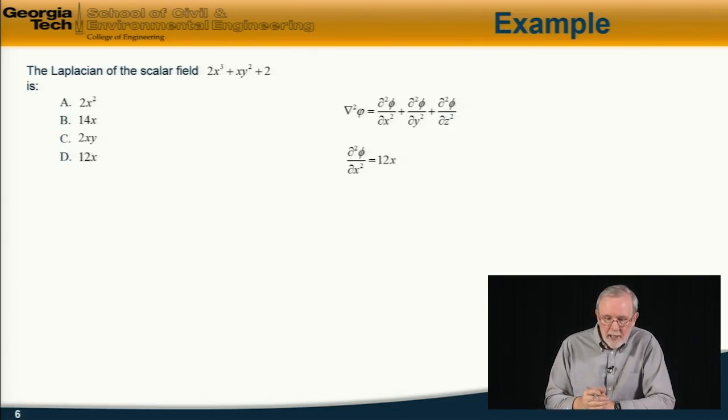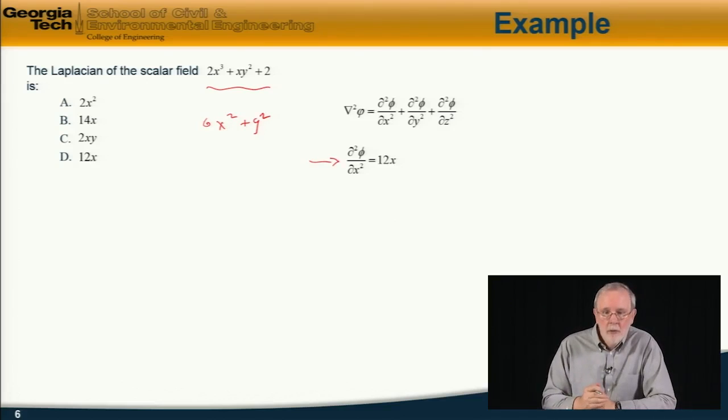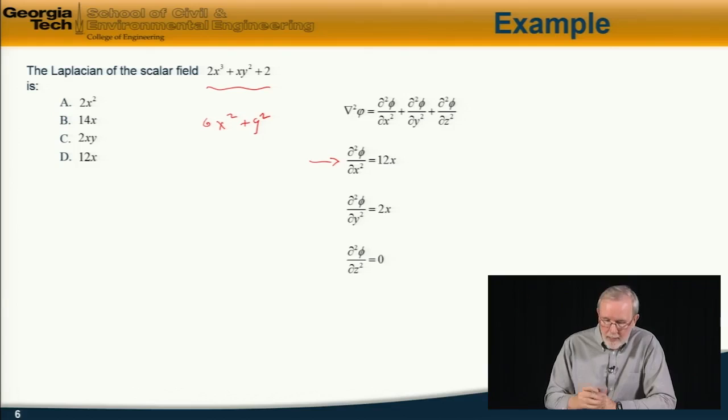So differentiating this. First, if I differentiate this function once with respect to x, I get 6x squared plus y squared. Then differentiating again, I get d2 phi by dx squared is equal to 12x. Similarly, the second differential of this function with respect to y is equal to 2x. And because there are no z terms in there, the second differential of phi with respect to z is equal to 0. And adding those up, we get del squared of phi is equal to 12x plus 2x is equal to 14x. And so the answer is b.